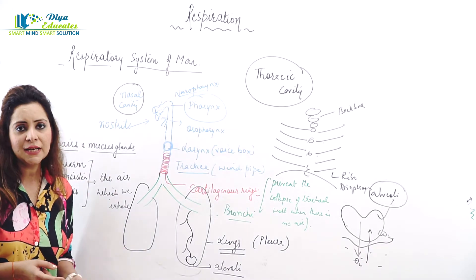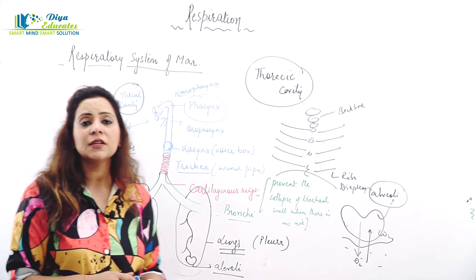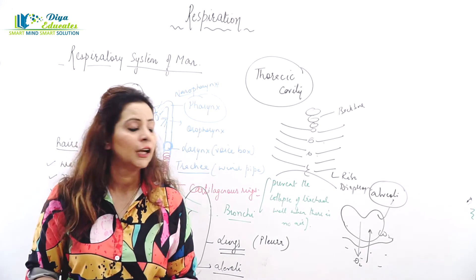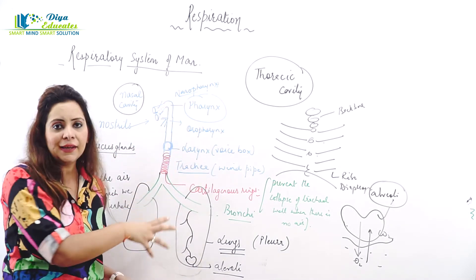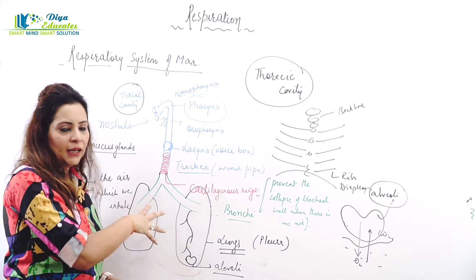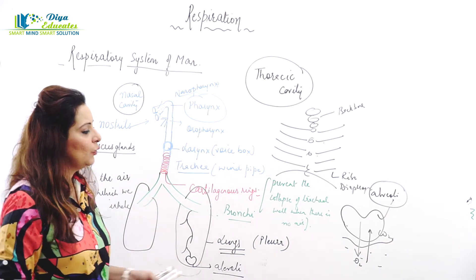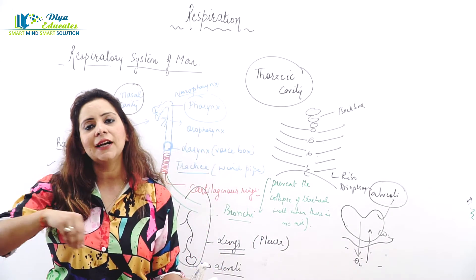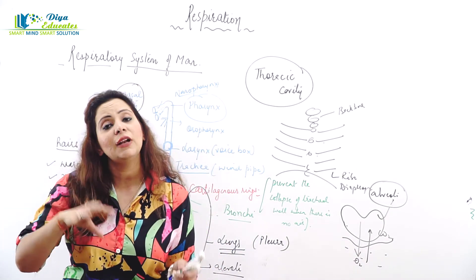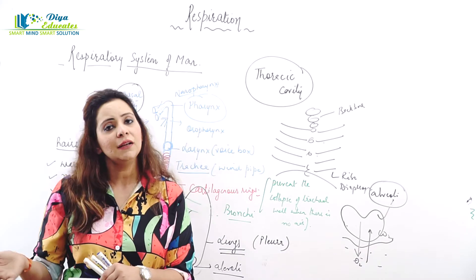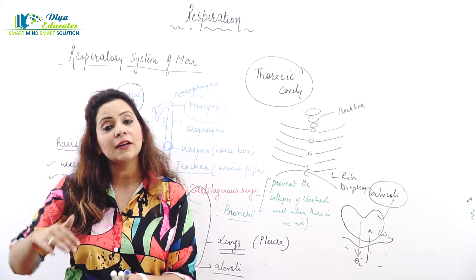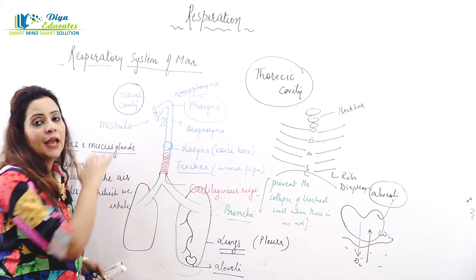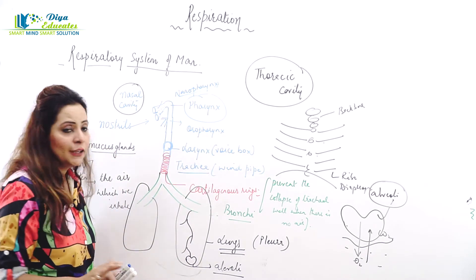This question is also frequently asked: name the part of the respiratory system from which the actual exchange of gases occurs. The trachea and bronchi are all part of the pathway, but the actual exchange happens at the alveoli. Whatever oxygen you inhale goes to the alveoli, passes into the blood, and carbon dioxide comes into the alveoli from the blood and is then exhaled.